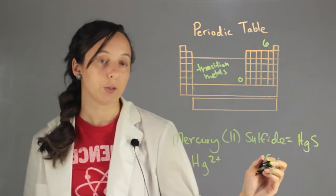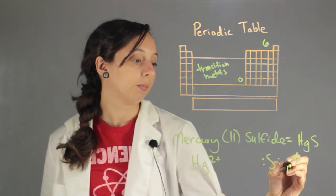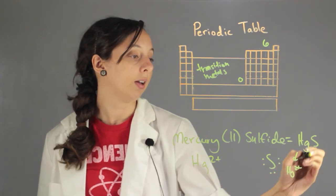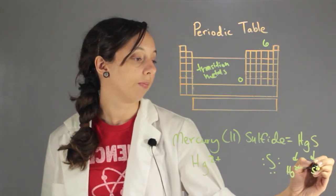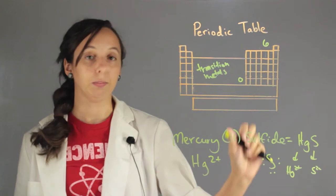Because if we broke them apart into the respective ions, we'd be looking at positive two mercury and negative two sulfur, which means that they cancel out completely.